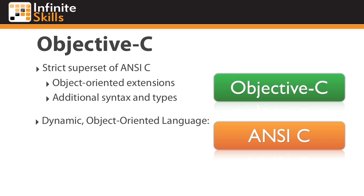Objective-C is considered a dynamic object-oriented language. This dynamism comes in three forms. There's dynamic typing, which allows your application to determine the class of an object at runtime. You'll sometimes hear the term duck typing, which comes from the phrase: if it walks like a duck and it talks like a duck, it must be a duck. This simply means that we can think less about concrete types, and more about object features and behavior.